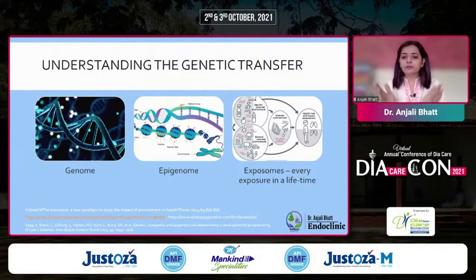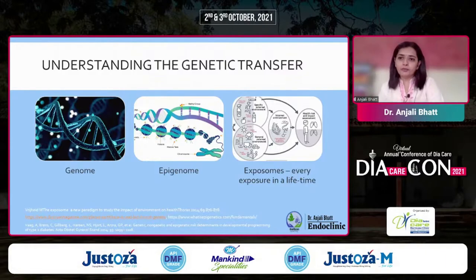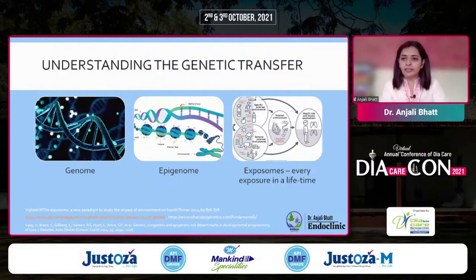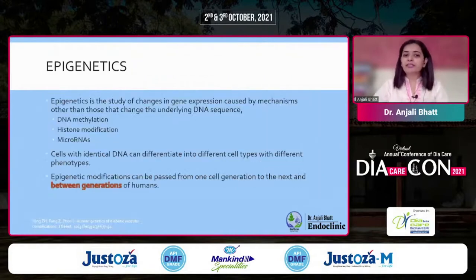Exposomes are a collective term for everything we are exposed to — in utero, in development, in reproductive years, in later phases of life, with our family, environment, friends, and colleagues. Whatever we are exposed to will affect how a particular DNA sequence — what we call a gene — will express itself. This is what is called epigenetics.